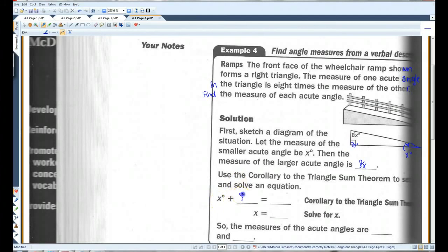So, x plus 8x, these two angles, have to add up to 90 degrees. I'm going to add a step in here. x plus 8x is 9x. If you divide by 9, x equals 10. So, the measures of the acute angles are 10 degrees and the other one is 8 times that, so it must be 80 degrees.